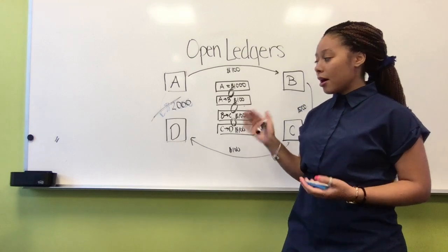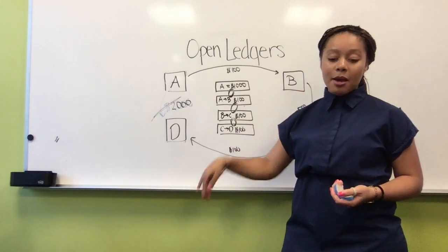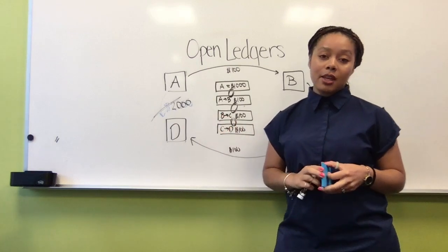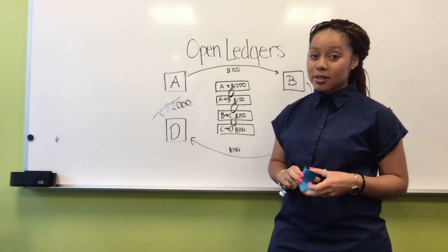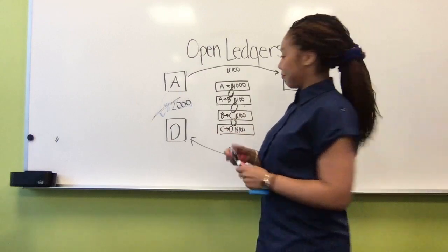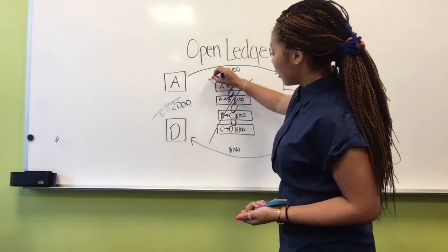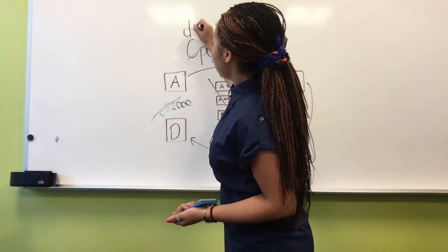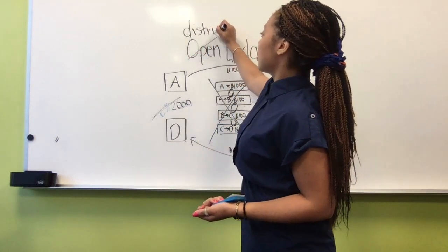So the next principle that we're going to go over is distributed ledgers. So blockchain is going to decentralize this process by creating nodes in the system or in the network, and so anyone will be able to hold a ledger.